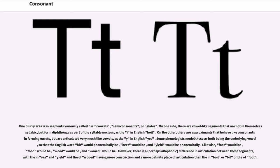On the other, there are approximants that behave like consonants in forming onsets but are articulated very much like vowels, as the Y in English 'yes'. Some phonologists model these as both being the underlying vowel, so that the English word 'bit' would phonemically be /bɪt/, 'beat' would be /biːt/, and 'yield' would be phonemically /jiːld/. Likewise, 'foot' would be /fʊt/, 'food' would be /fuːd/, 'wood' would be /wʊd/, and 'wooed' would be /wuːd/.